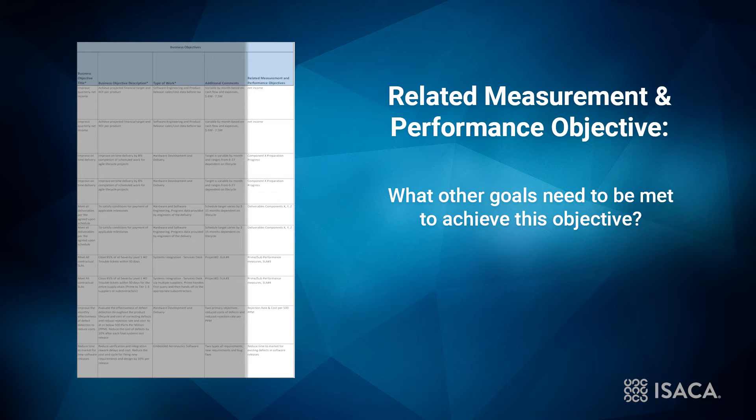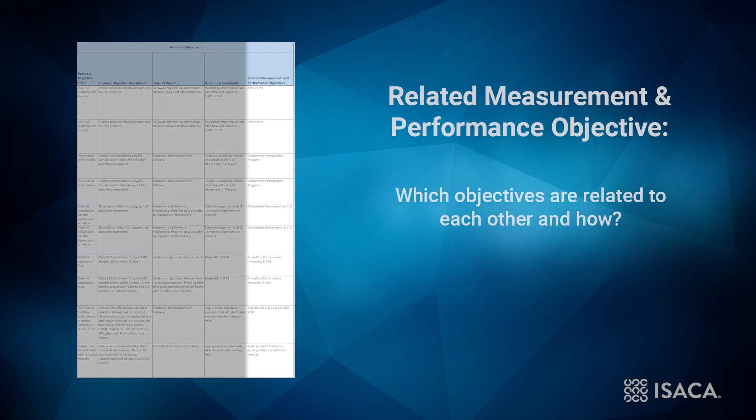Very often, objectives are tiered. For example, an organization may have a high-level objective to improve its average customer satisfaction score, but there may be one or more related performance objectives. In this column, both business objectives should be stated, but the focus should be on the performance objective. In some instances, it may be helpful to examine the business objective and the performance objective as separate items. If so, use this column to indicate which objectives are related to each other and how.